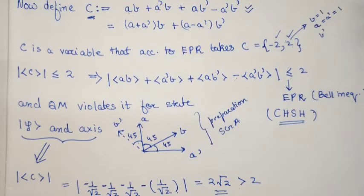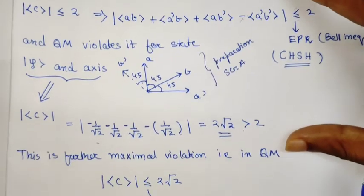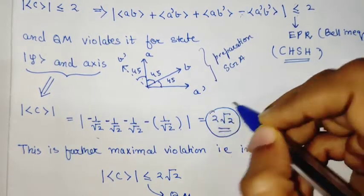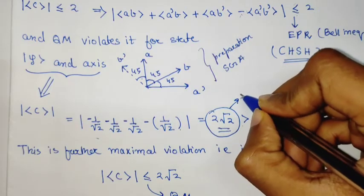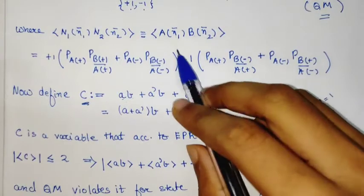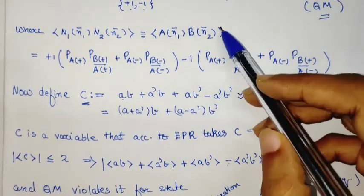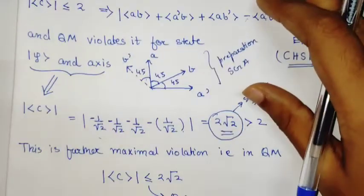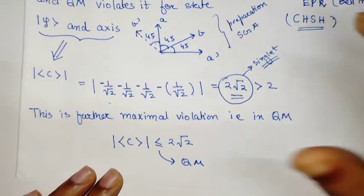Indeed, EPR is violated and realism and localism are not what nature abides by. This violation of 2√2 is special. To get this violation, we used the singlet state, because expectation values in quantum mechanics are with respect to states.